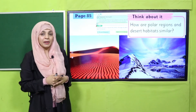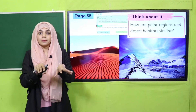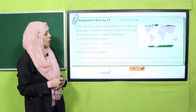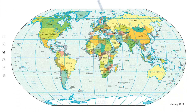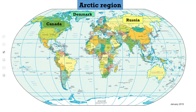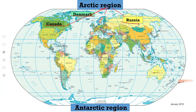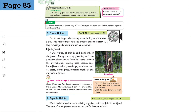Think about it: how are polar regions and desert habitats similar? Here is the world map. First, we will look at the arctic region. Jo bhi countries hain, woh hain Canada, Denmark and Russia - which you can see on the map. They all belong to the arctic region, jo north pole pe hain. Then comes the Antarctic region and the countries here are Australia and New Zealand, almost at the south pole. These countries are extremely cold - yahan bohut zyadha thand hoti hai.